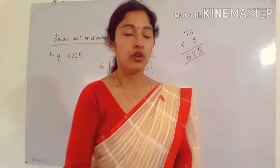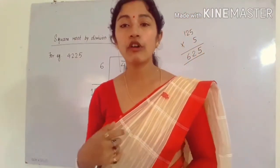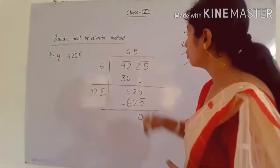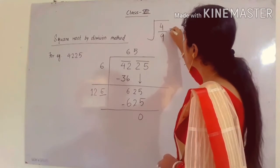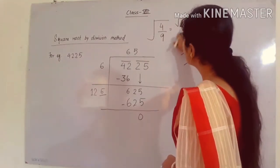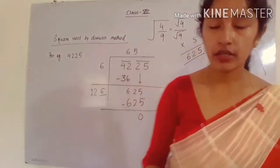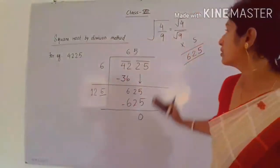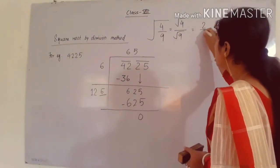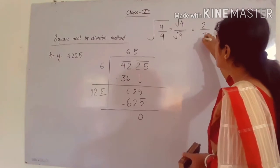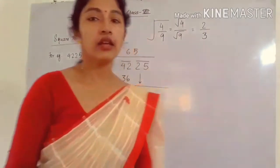When you have to find the square root of a rational number, you have to find the square root of the numerator as well as the square root of the denominator individually. For example, if there is √(4/9), you can write it as √4 / √9. The square root of 4 is 2 and of 9 is 3. So the square root of 4/9 is 2/3.